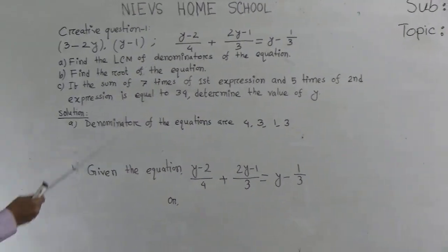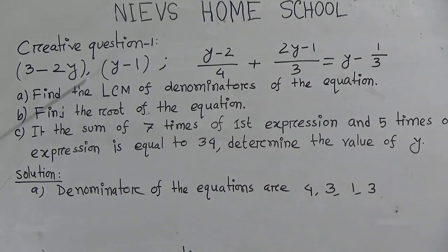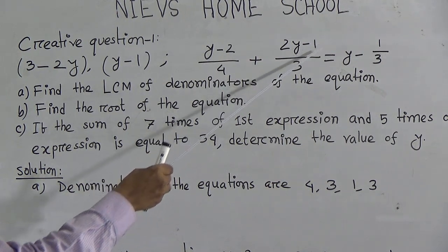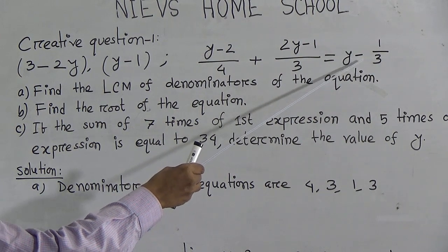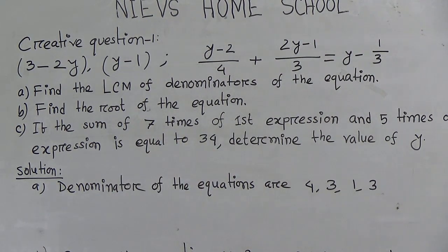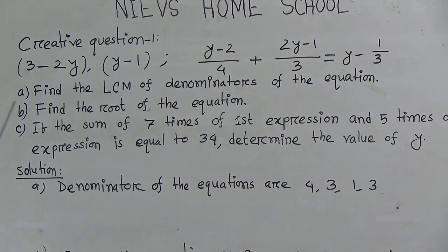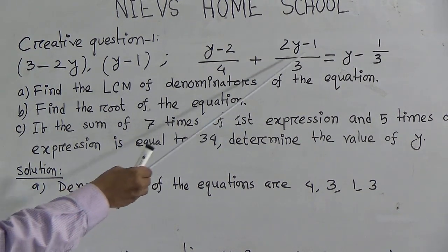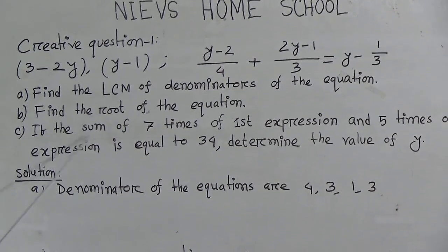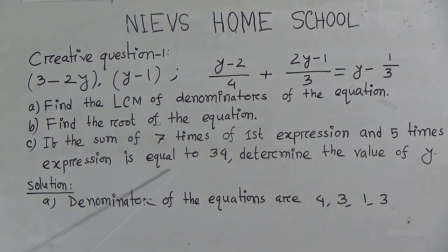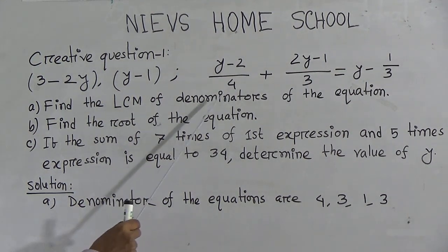Let us first read the creative question. We have the expression 3 minus 2y, and y minus 1 is also a mathematical expression. The equation is: y minus 2 by 4, plus 2y minus 1 by 3, equal to y minus 1 by 3. Sub-question (a): find the LCM of denominators of the equation. Sub-question (b): find the root of the equation. Sub-question (c): if the sum of 7 times of the first expression and 5 times of the second expression is equal to 34, determine the value of y.